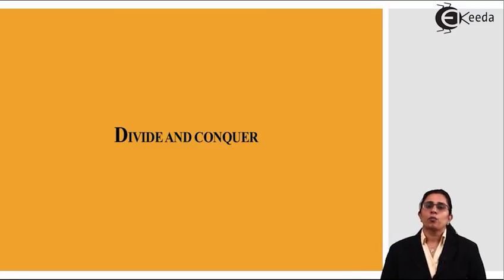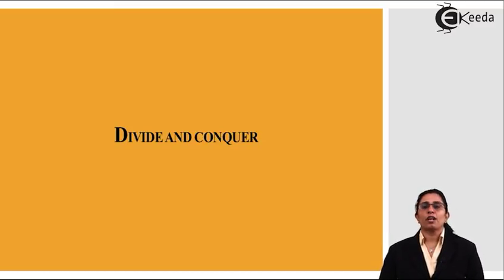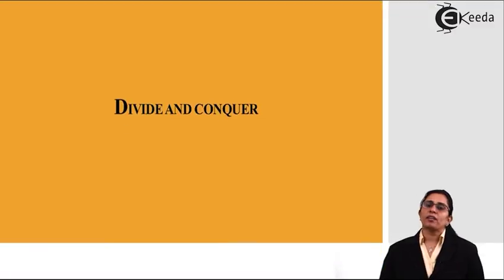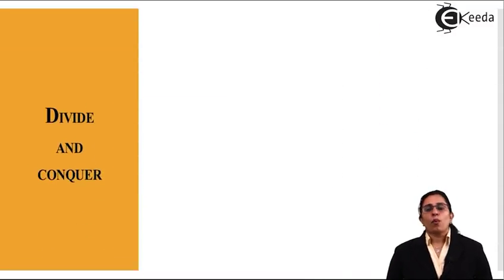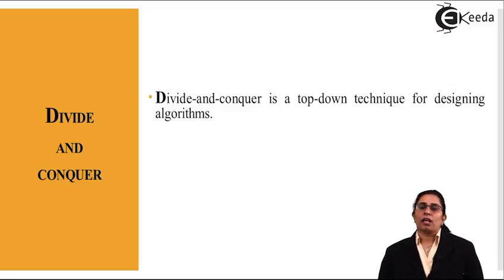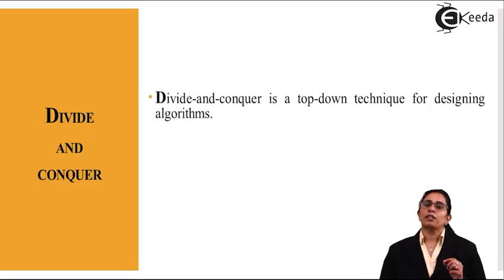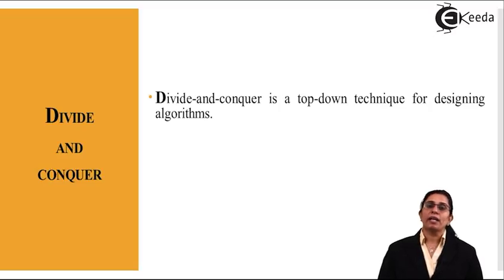Today we will study what is meant by the divide and conquer approach for algorithms. Algorithms follow different approaches and one of them is known as divide and conquer. The divide and conquer approach, as the name suggests, is a top-down technique for designing an algorithm. A top-down technique means that I start from the top of my problem — I take any real world problem and then start dividing it.